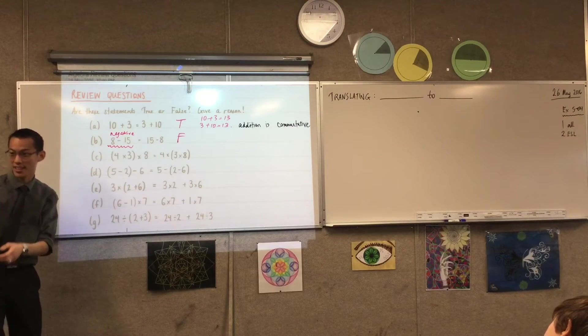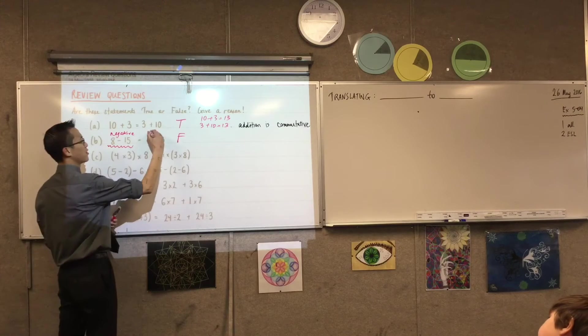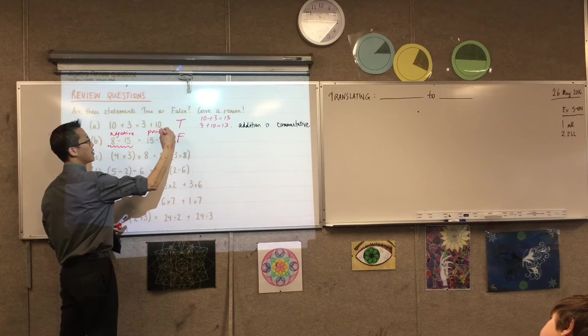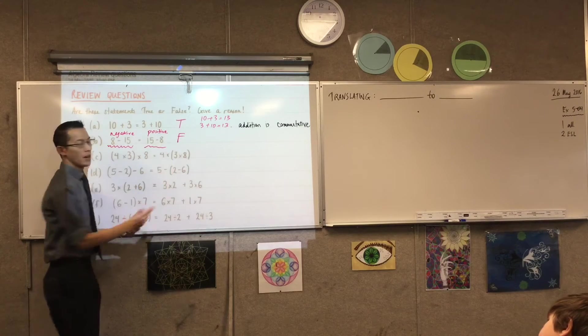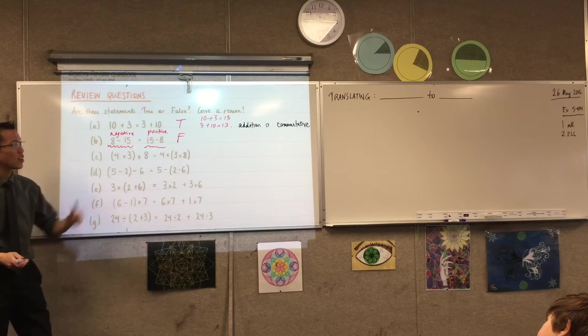What is 15 take away 8? It's 7. It's 7. And so, this guy's positive. Okay? So, we're getting different things on both sides. So, that's why it's false.